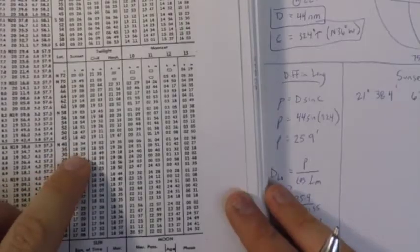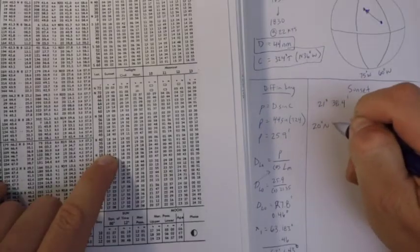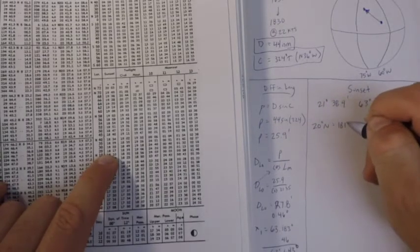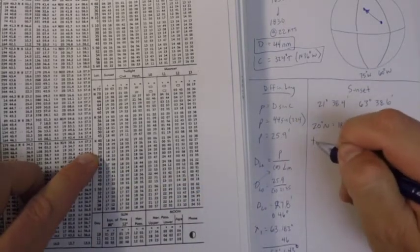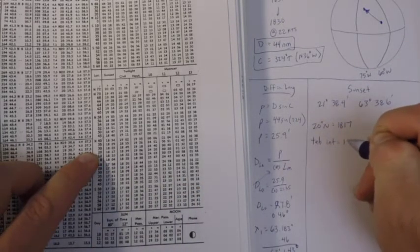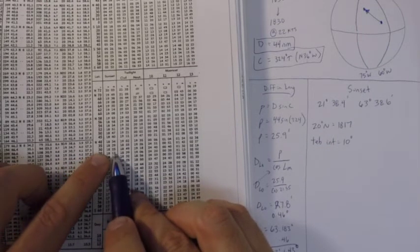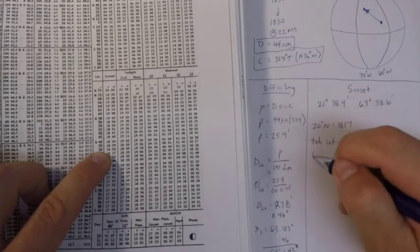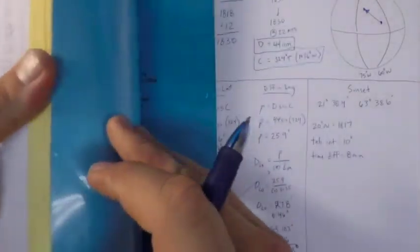So here on the 10th of April, I see sunset at 20 degrees north is 1817. I see that my tabular interval is 10 degrees, and I see that the gap between these two times is 8 minutes, so we'll call that a time diff. And then I need to use table 1, or I can mentally interpolate this, I guess, but we'll do table 1.